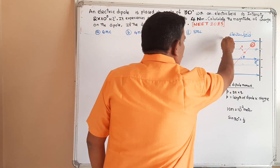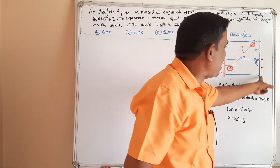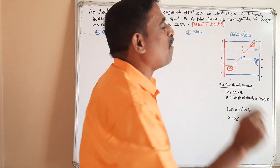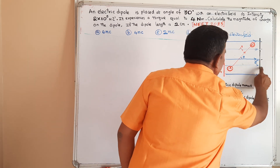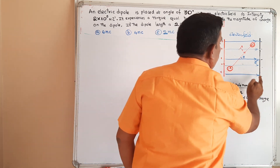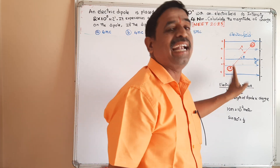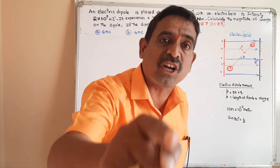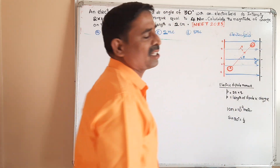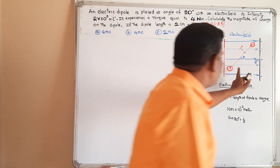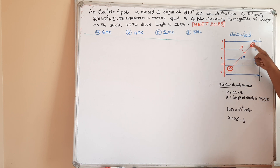Here there is a positively charged plate and here there is a negatively charged plate. Electric lines of force are running from positive charge to negative charge. In between the positive plate and negative plate, an electric field is created. The direction of electric field is from positive charge to negative charge. In this electric field, an electric dipole is kept.